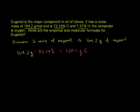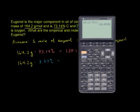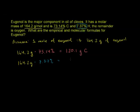Now for hydrogen: 164.2 grams of eugenol times 7.37%. Using the calculator, 164.2 times 0.0737 gives us 12.1 grams of hydrogen.